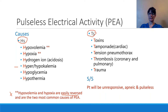Looking at the T's, it can be toxins, so any kind of overdose should come to mind, as well as cardiac tamponade or tension pneumothorax, as well as thrombosis — meaning coronary or pulmonary, such as myocardial infarction and pulmonary embolus — as well as trauma, which can happen when a patient takes a very forceful impact to the chest.